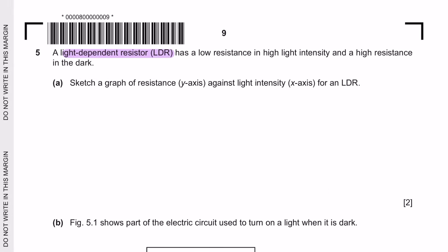A light-dependent resistor LDR has a low resistance in high light intensity and high resistance in the dark. We have four types of resistors. Fixed resistor and variable resistors have a directly proportional relationship. However, light-dependent resistor and thermistor are inversely proportional, meaning that more light, you get lower resistance. And for thermistor, the higher the temperature, the lower the resistance and vice versa.